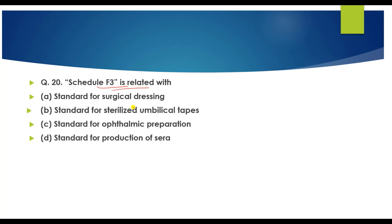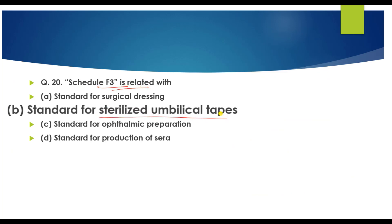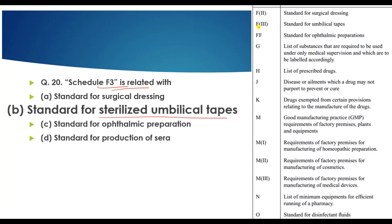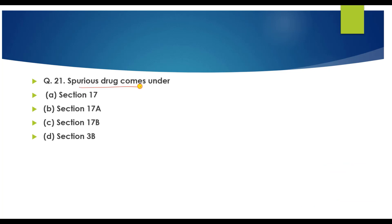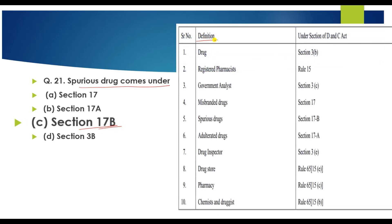Question number 20: Schedule F-3 is related to sterile umbilical tape. Question number 21: Spurious drugs come under which section of the Drugs and Cosmetics Act? The answer is Section 17B.